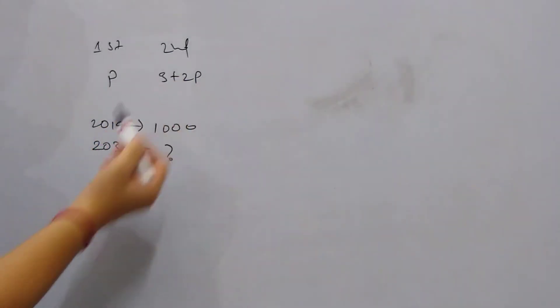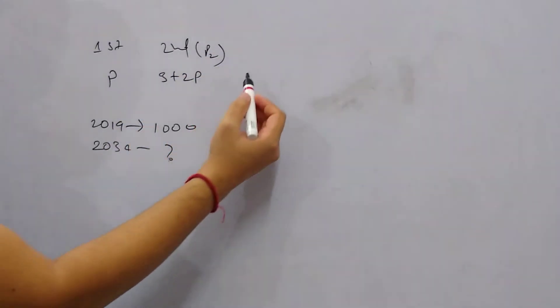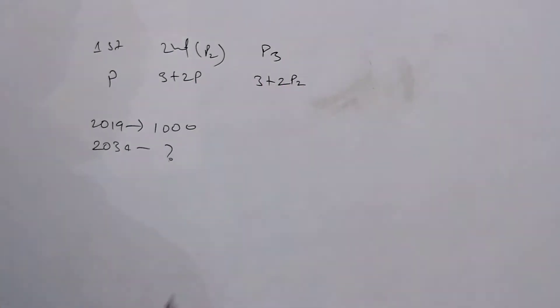So for second year, we know the population. Let's say this is p2, population in second year. Similarly, population in third year, p3, will be 3 + 2p2.